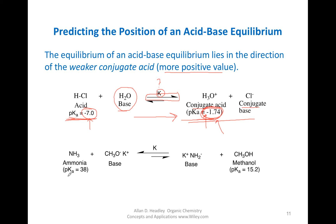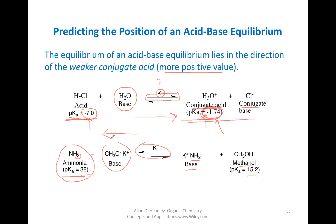Here's another example. The pKa of ammonia is 38 and the pKa of the conjugate acid methanol is 15.2. Since 38 is more positive than 15.2, the equilibrium here lies to the left. So if you're trying to get this reaction to work, you would not get a lot of product because the equilibrium favors the reactants.